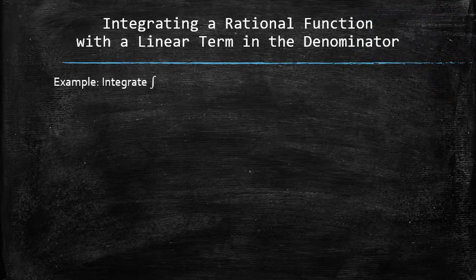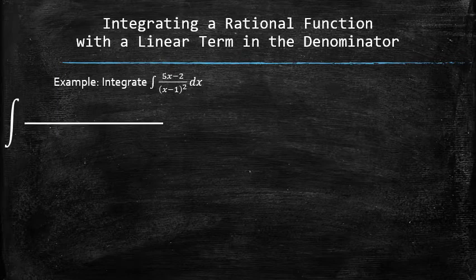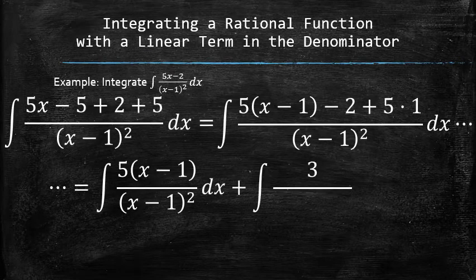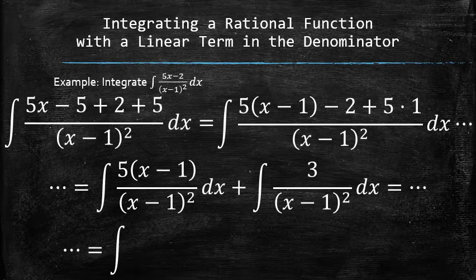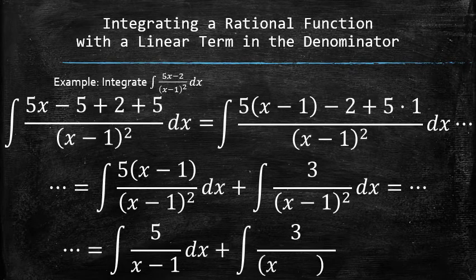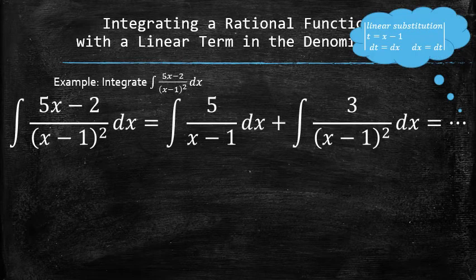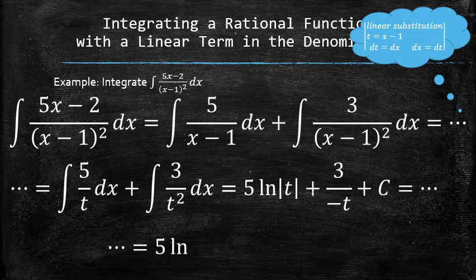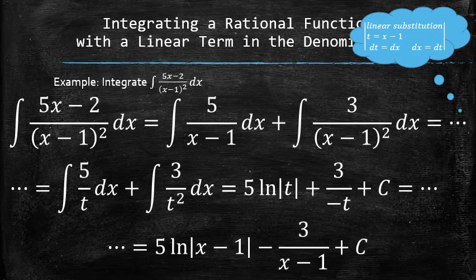Let's do another example. First, we add and subtract 5 in the numerator and regroup the terms. Then, we use the linearity property of the integrals and split the original integral into two. After reducing the rational function in the first integral, we now have a pair of simple integrals of similar type. We set up the same linear substitution for both of them, and as a result we now have two simple integrals in terms of t. We finish the process by finding the antiderivatives and plugging the original expression x minus 1 back for t.